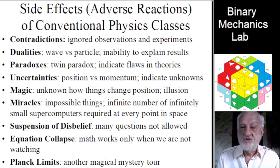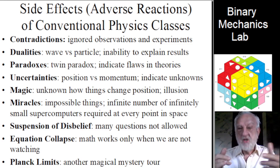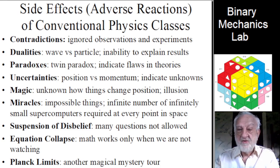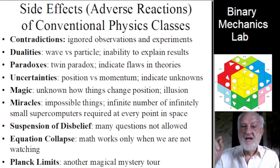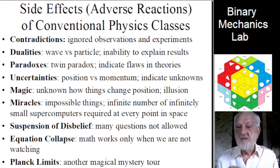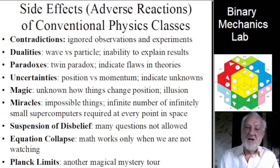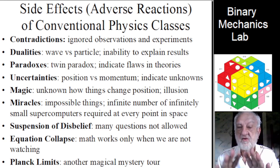One is contradictions, such as ignored observations and experiments. For example, scattering data showing a non-spherical proton shape is ignored as investigators continue to model and believe in a spherical proton.